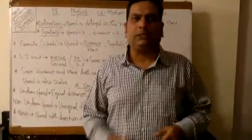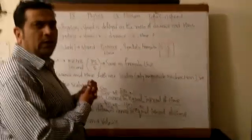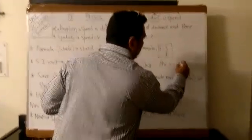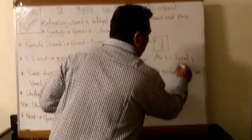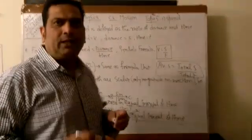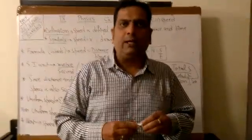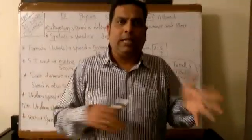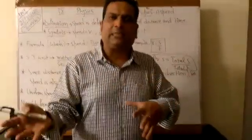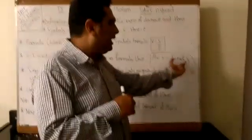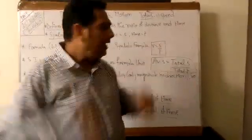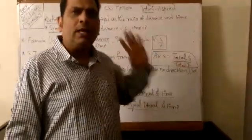Another term related to speed is average speed, which is equal to total distance upon total time. When traveling from one point to another with varying distances — whether less, large, or small — we take the total distance divided by the total time of the journey. That ratio is called the average speed.